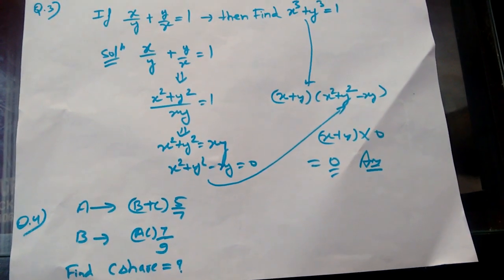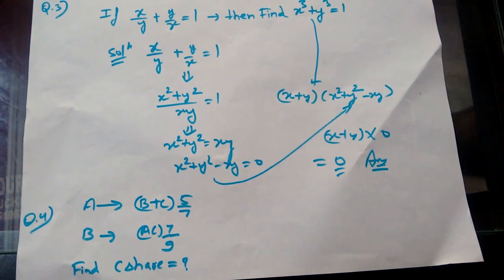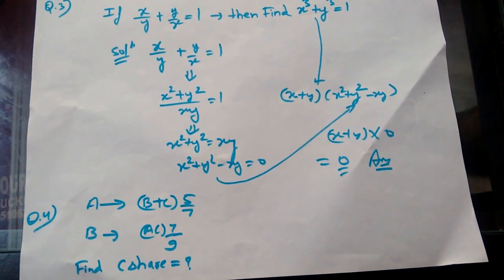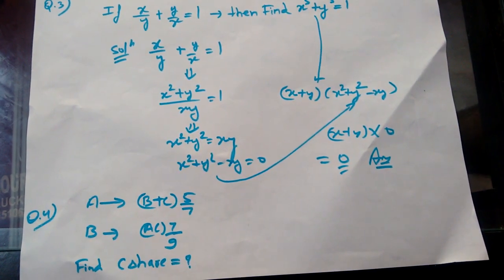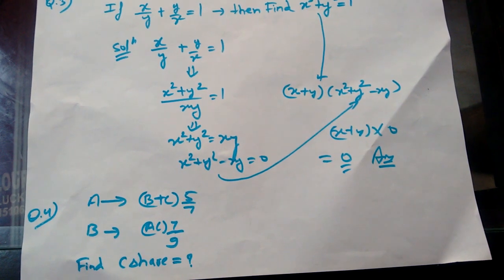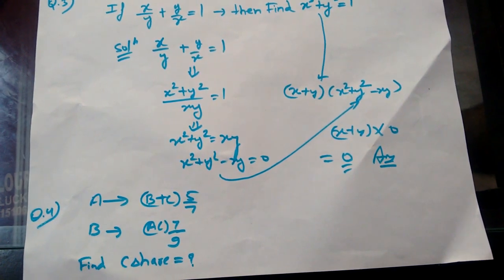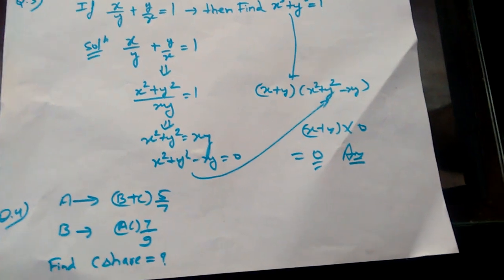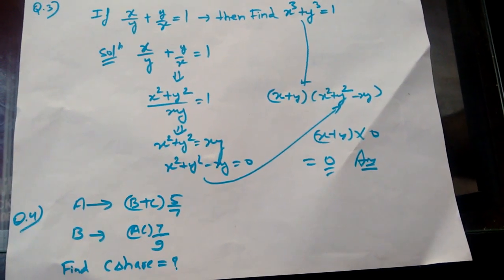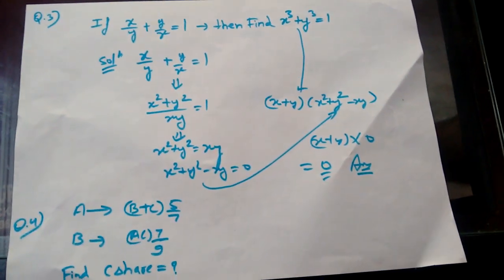So this goes to x cubed plus y cubed is equal to 0. So this may say this way.